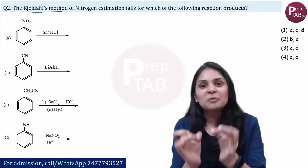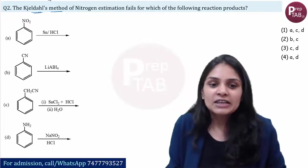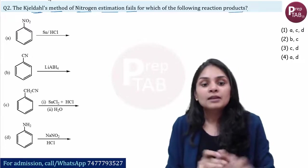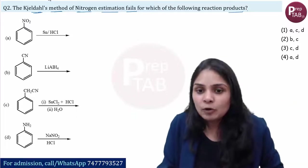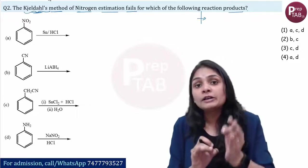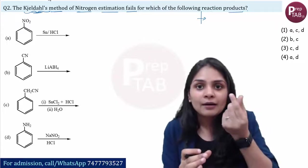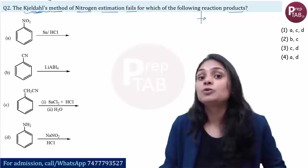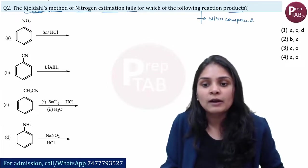Second question, the Kjeldahl's method is one of the most favourite tests of your JEE mains because there are many questions. Kjeldahl's method of nitrogen estimation fails for which of the following products. You should know this first. Kjeldahl's method for determination of nitrogen, which of the compounds have nitrogen, how much amount we can use Kjeldahl's method. But Kjeldahl's method doesn't work for nitro compounds like nitrobenzene, and if you have diazo compounds, diazonium salt N2 plus, this doesn't work.